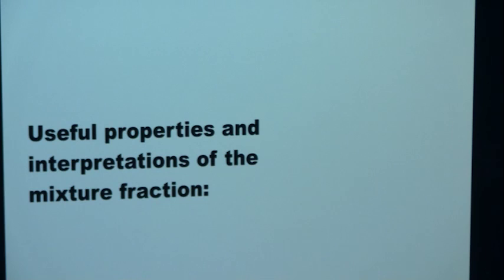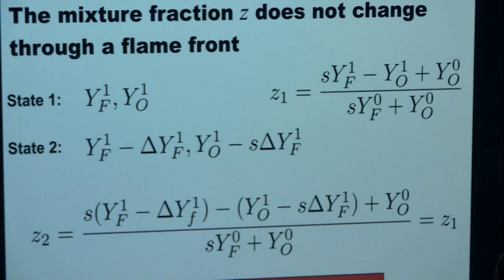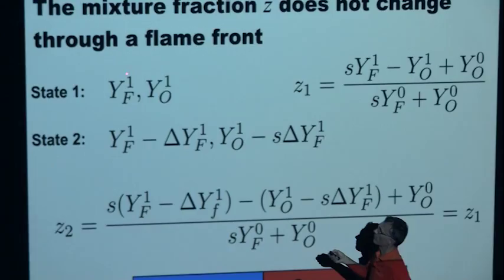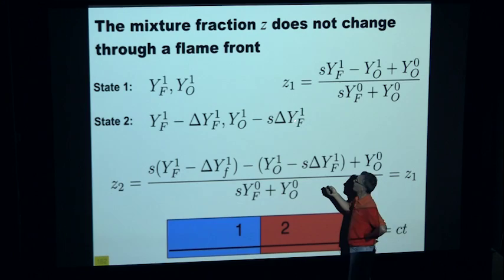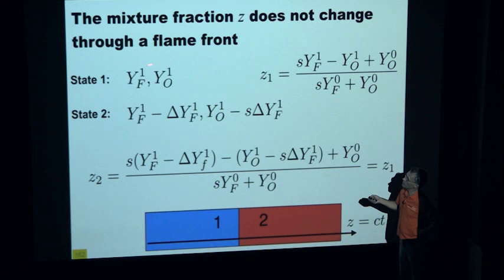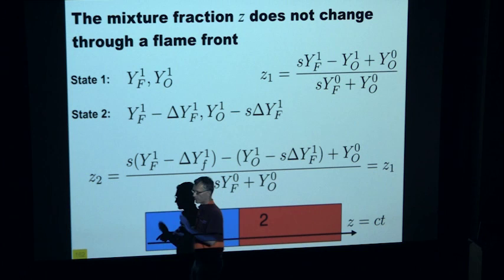Returning to mixture fraction: a key property is that in a premixed flame, if you have a certain mixture fraction Z in front of the flame, you have the same value in the burned gases. In the fresh gases state 1 you have Y_fuel and Y_O; in the burned gases state 2 you have Y_fuel minus delta on fuel and S·delta on the oxidizer, where S is the stoichiometric ratio. Plugging that into the definition of Z gives Z_2 = Z_1. So through a flame front, the mixture fraction does not change — to first order, when Lewis numbers are equal, Z is conserved.